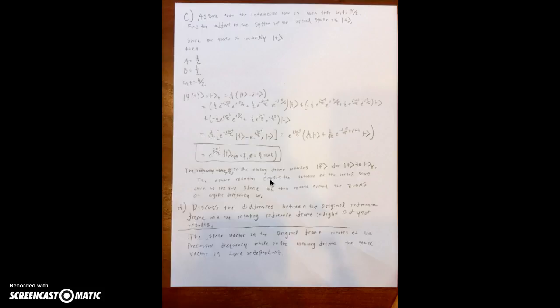Part D asks us to discuss the differences between the original reference frame and the rotating reference frame in light of our results. Our results showed us that the state vector in the original frame rotates at the precession frequency, while in the rotating frame the state vector is time independent. This is my standard 3.2.